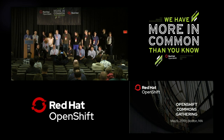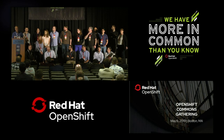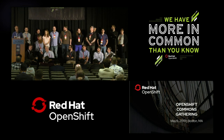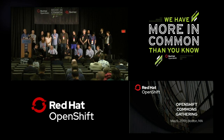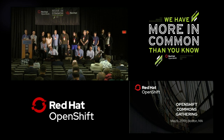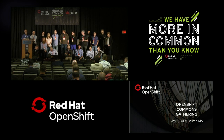The version number for the first GA will be 4.1. You should expect that to be available in about two weeks. The beta that many of you participated in was a 4.0. After 4.1 we're going to get back on our three-to-four month release cadence — 4.2 should be end of August/September, and we're trying to get 4.3 out around the end of the year.